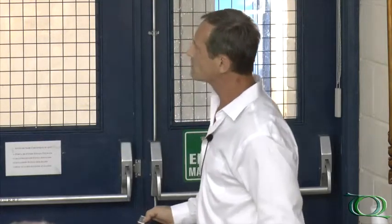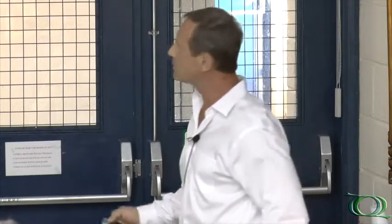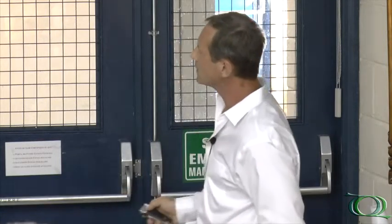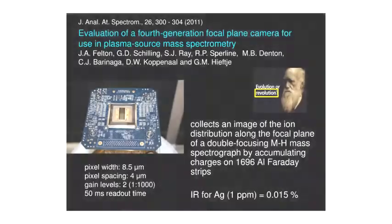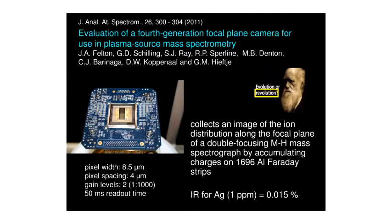The focal plane camera was the result of a development program between Bonner-Denton in Arizona, Dave Copenall, a Pacific Northwest laboratory in Washington, and Gary in Indiana. This focal plane camera is a solid state device. It went through four generations of development over about six years.